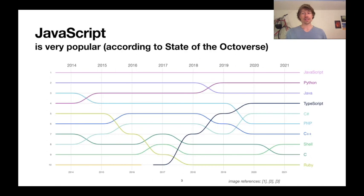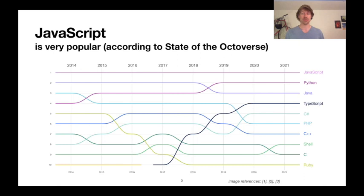If you're unfamiliar with the language, JavaScript is actually very popular. At least according to the State of the Octoverse, this GitHub info dump that they put out every year, it's the most popular language in GitHub repos, and it has been for a long time. A large part of this popularity is owed to its use as a client-side scripting language.